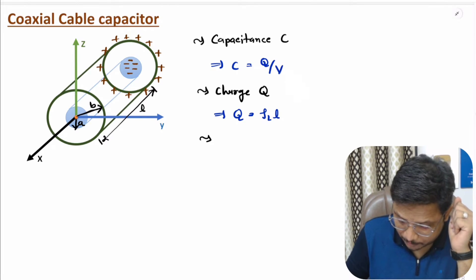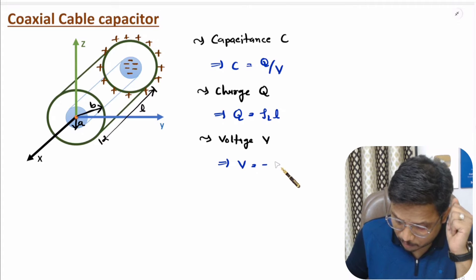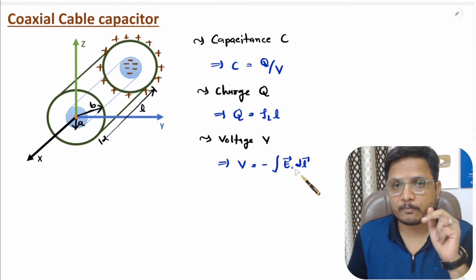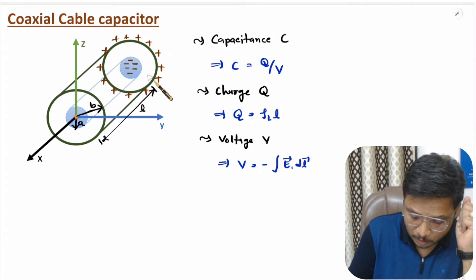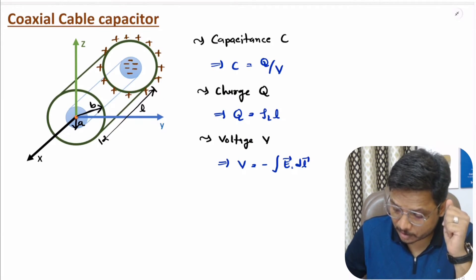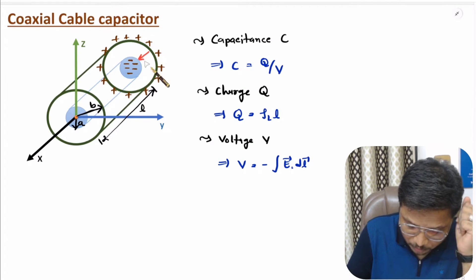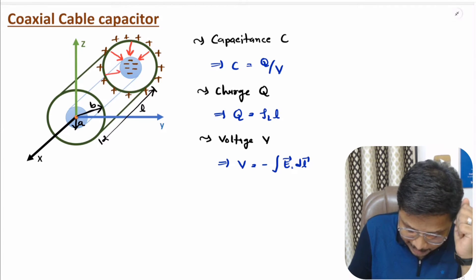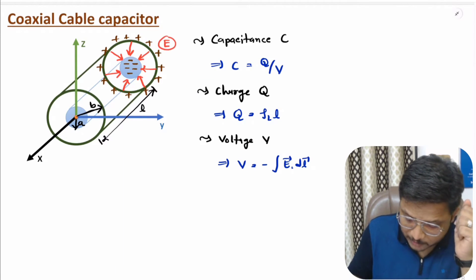Potential is voltage V. Voltage can be identified based on electric field — voltage is minus of line integration of electric field. You need to understand what the electric field is here. If you observe the direction of electric field, it will be having direction from positive charge to negative charge. This electric field is happening because of line charge rho L.